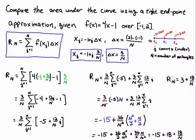So our right endpoint approximation is three plus eighteen over n, which gives us an estimate of the area under the curve. For example, with ten rectangles: three plus eighteen over ten equals three plus one point eight, which is four point eight. So the approximate area under this curve using ten rectangles is four point eight.